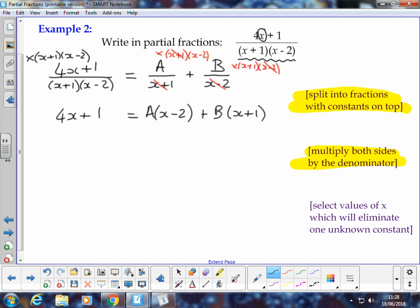A slightly easier way of thinking about it when there's only two fractions is that the constant terms effectively are multiplied by the other factor than the one that's on the denominator. But it's good to know why that's the case. So I've done the first two stages,